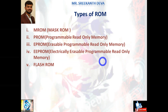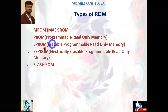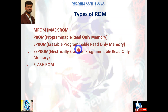ROM is categorized into different types: MROM (Mask ROM), PROM (Programmable Read-Only Memory), EPROM (Erasable Programmable Read-Only Memory), EEPROM (Electrically Erasable Programmable Read-Only Memory), and Flash ROM. These are all the various types of ROMs available in the market. Coming to MROM — Mask ROM — it is the oldest type of read-only memory. It has become obsolete and is not used anywhere currently.